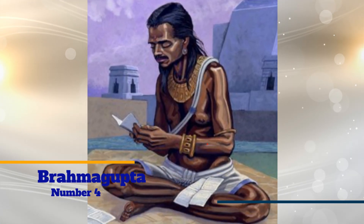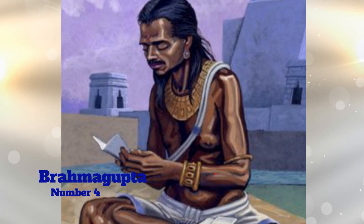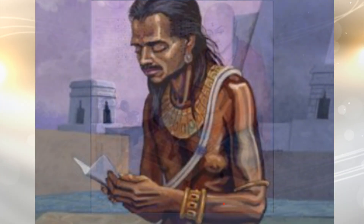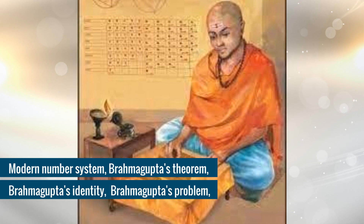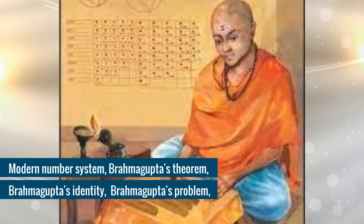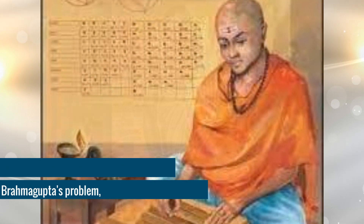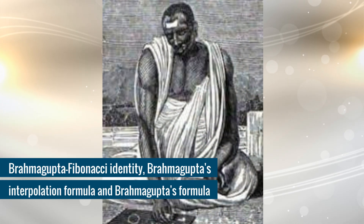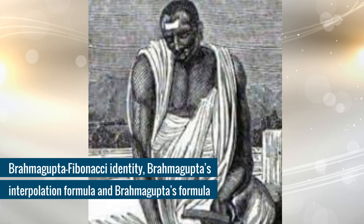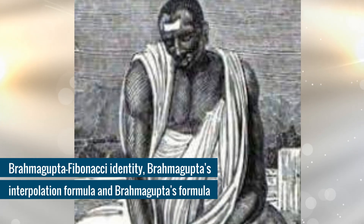Number 4: Brahmagupta. Brahmagupta was an Indian mathematician and astronomer. He was known for discovering the modern number system, Brahmagupta's theorem, Brahmagupta's identity, Brahmagupta's problem, the Brahmagupta–Fibonacci identity, Brahmagupta's interpolation formula, and Brahmagupta's formula.